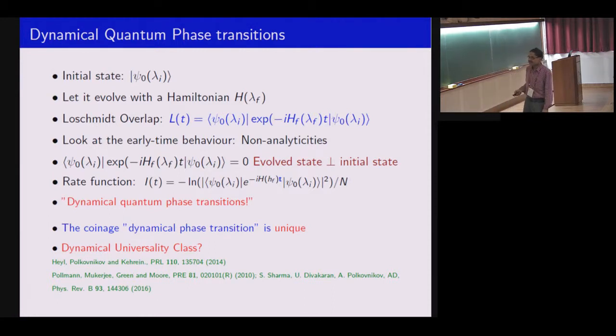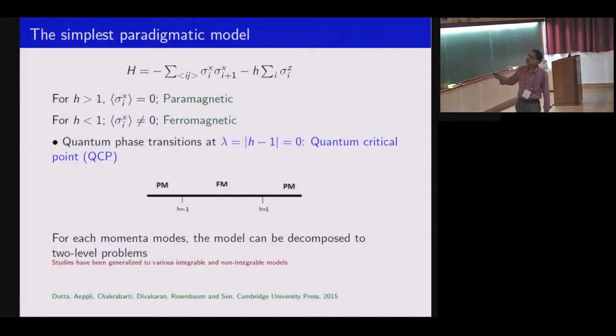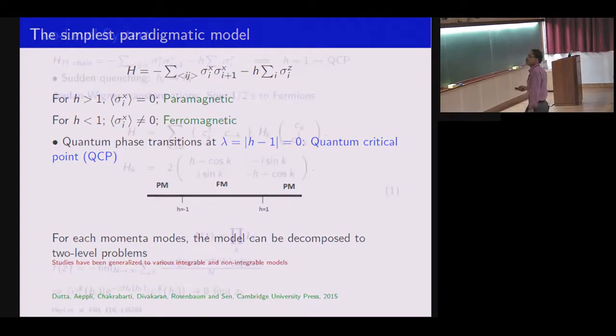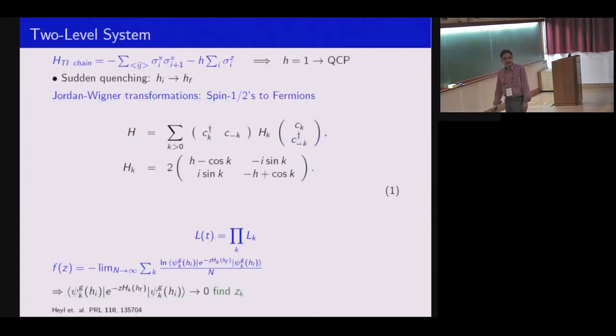To elaborate, I take the simplest paradigmatic model: the transverse Ising model, which is exactly solvable. It has two non-commuting terms, which is why it shows a quantum phase transition if you change the transverse field. Sigma x and sigma z do not commute, so it is truly a quantum Hamiltonian. Even at t equals zero, by tuning this field, you can go from a ferromagnetically ordered phase to a paramagnetic ordered phase. This model is important because it is integrable and you can do everything in terms of two-by-two matrices for each momentum mode.